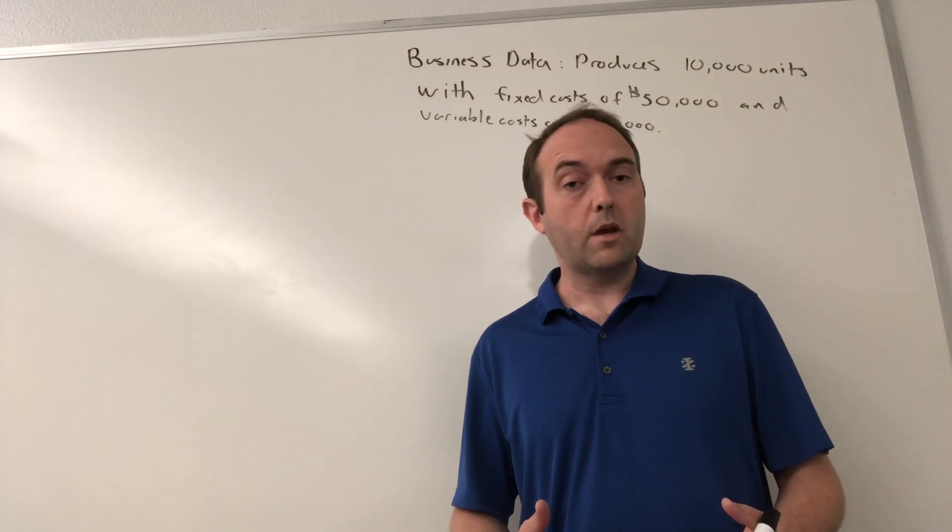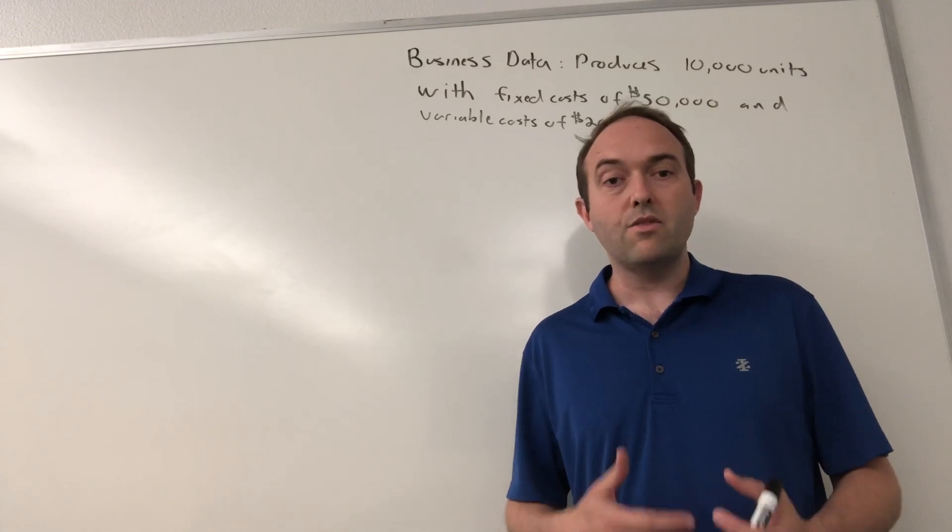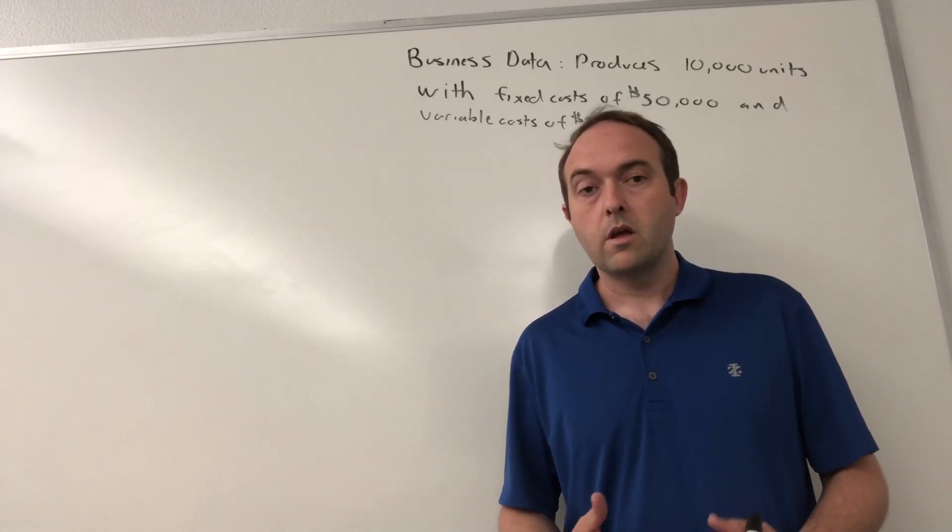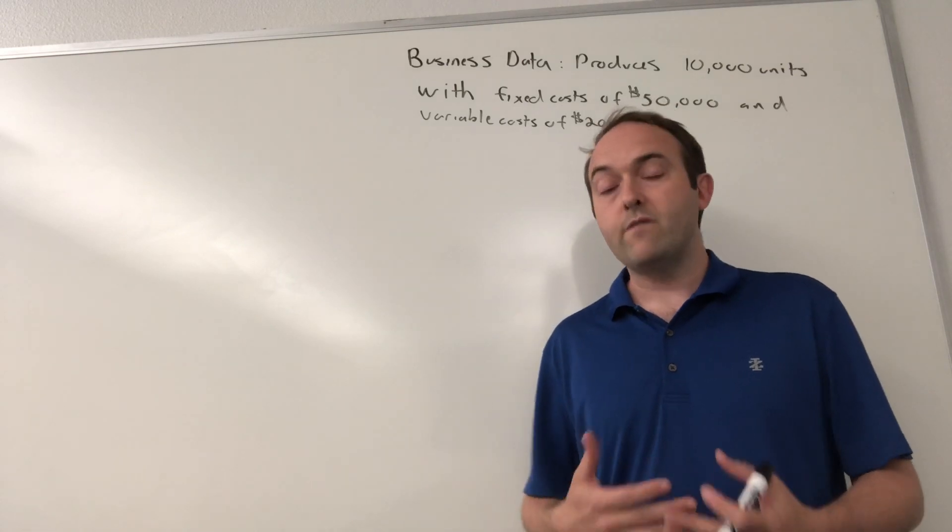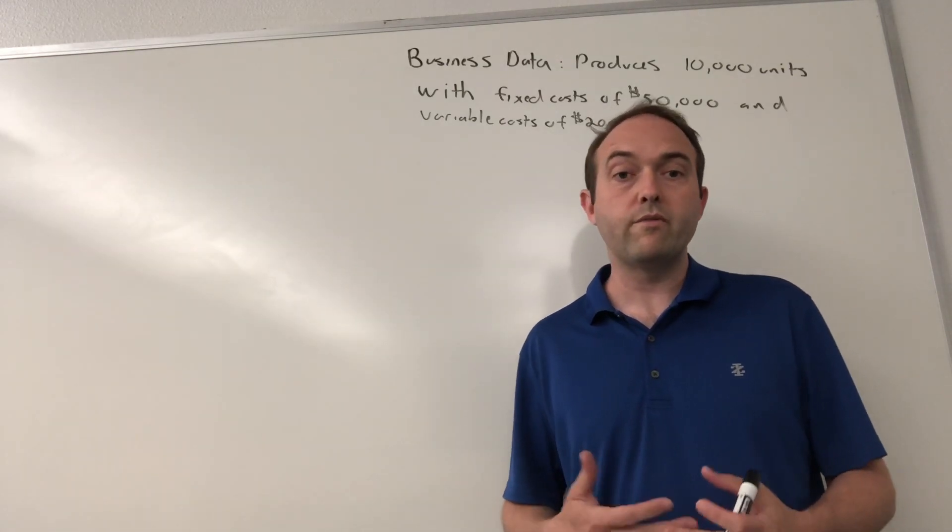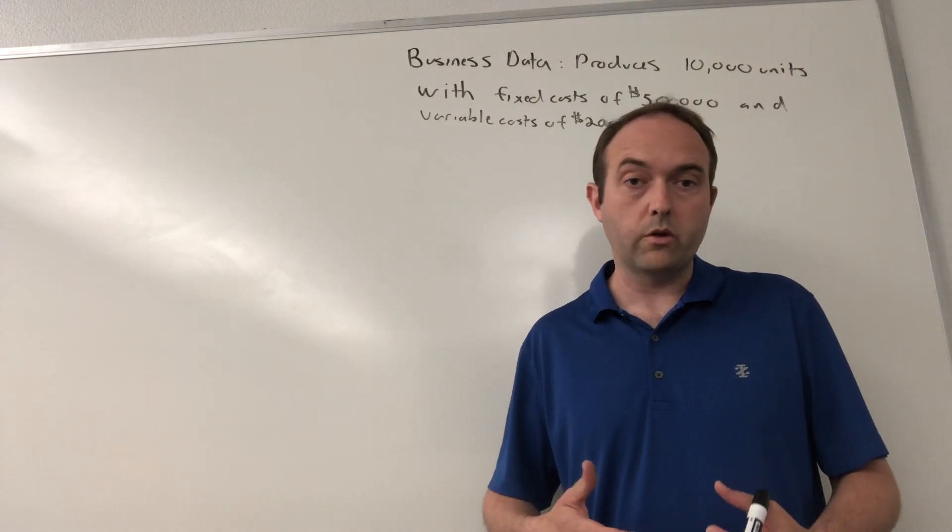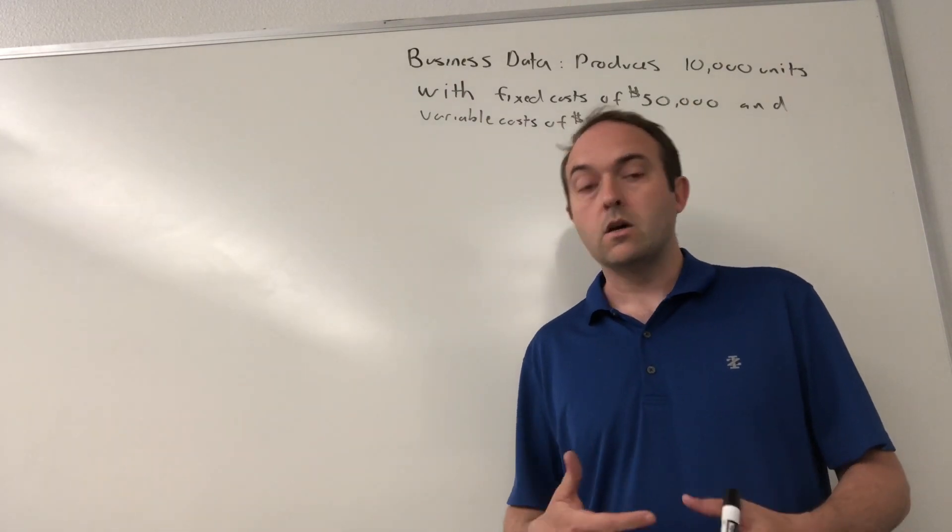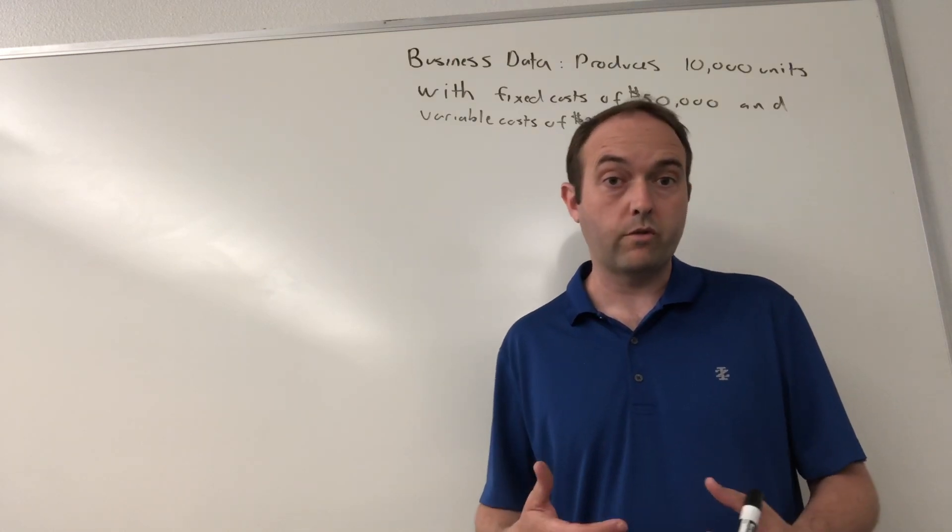So let's set up an example for us. In this example, we've got a business that is going to produce 10,000 units of their product. When they produce 10,000 units, they're going to have $50,000 worth of fixed costs and $200,000 worth of variable costs. With that data, we can go through the calculation of some of our basic costs for this firm.